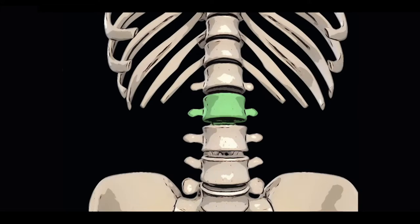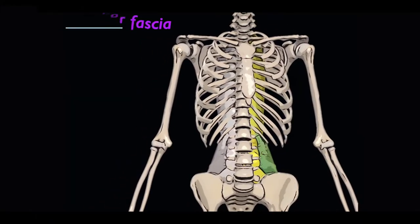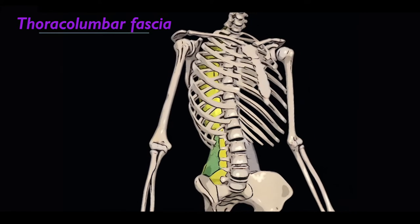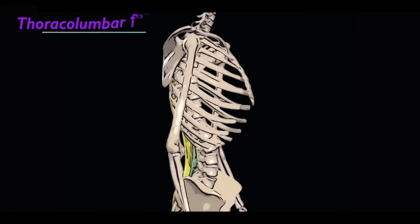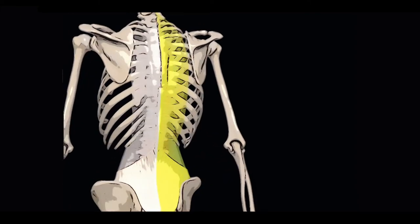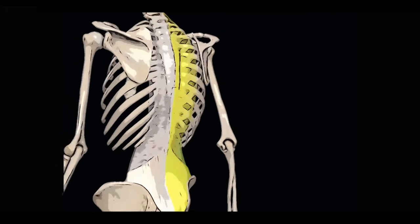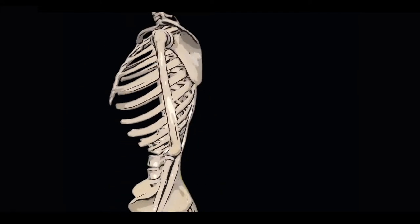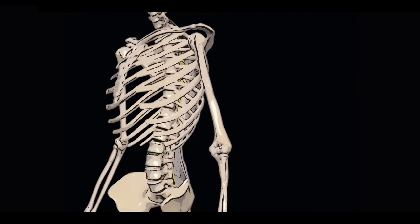The thoracolumbar fascia lies on either side of the lumbar vertebrae and surrounds the deep muscles of the back and trunk. It is composed of a network of collagen fibers which form a complex arrangement of multiple fascial layers, and the orientation of these fibers varies and relates to the overall function of the thoracolumbar fascia.